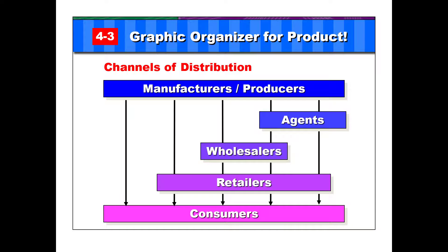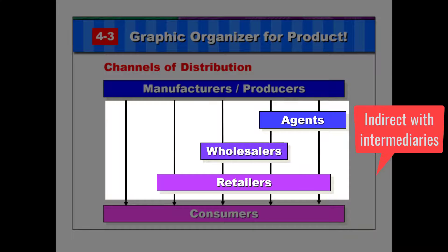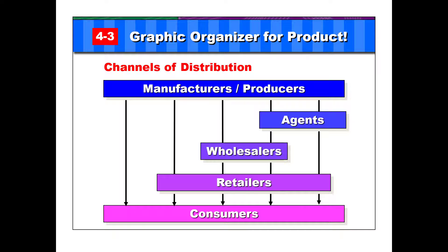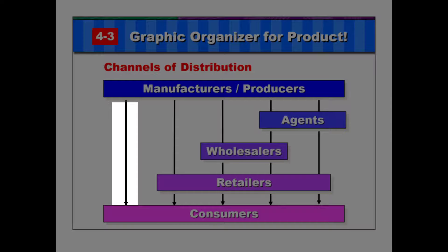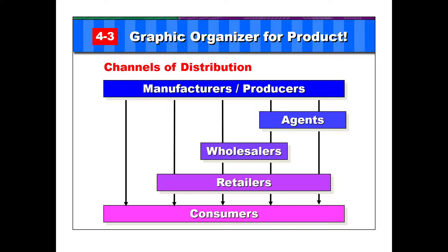Just as a recap, here is a complete channel of distribution. You always start with the manufacturer on the top and the consumers on the bottom. If it is an indirect channel of distribution, there are a bunch of intermediaries. In this example, we have three different types shown: agents, wholesalers, and retailers. There are different paths — these lines — that the product can take to get to the consumer. It could go directly from the manufacturer to the consumer, or indirectly through one of those intermediaries.